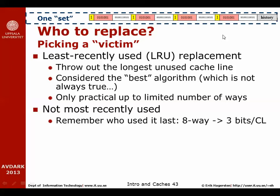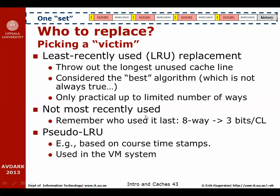Another algorithm which is easier to implement is Not-Most-Recently-Used (NMRU), where you simply remember which of the four cache lines was most recently used, and at replacement you make sure you don't replace that cache line — otherwise you can randomly choose among the others. This is more practical; it doesn't require read-modify-write, just a write for each access. For an eight-way cache, three bits of history information would be sufficient.